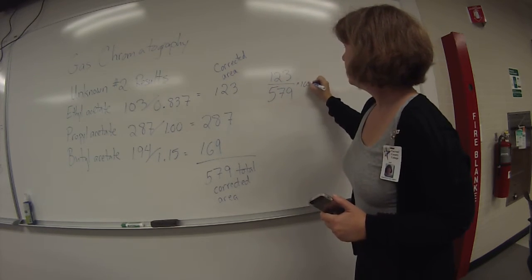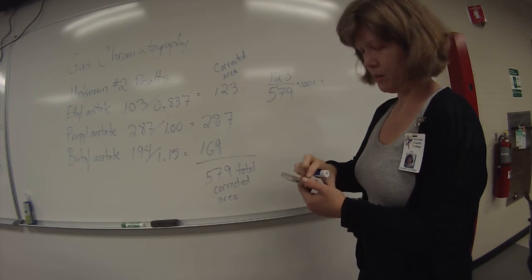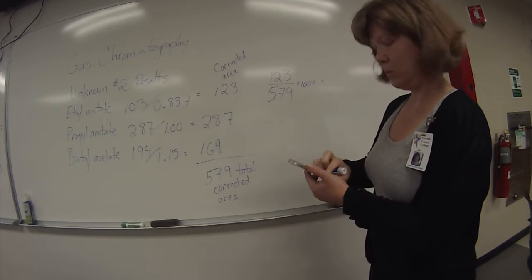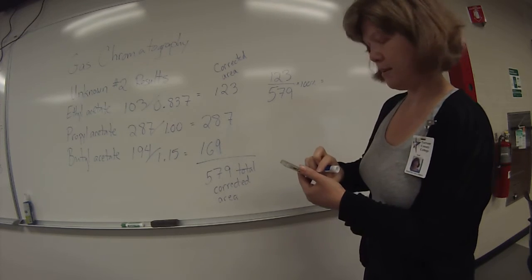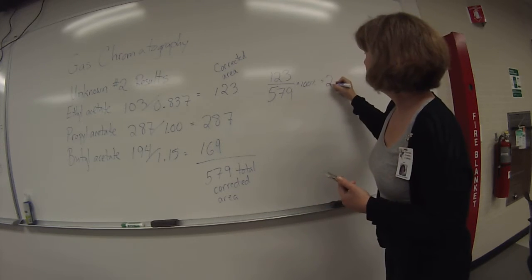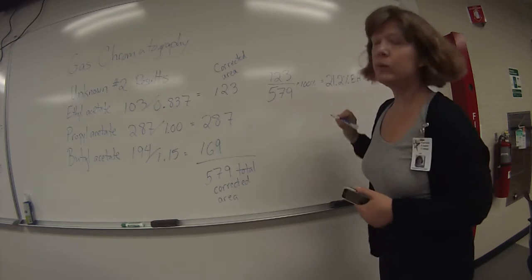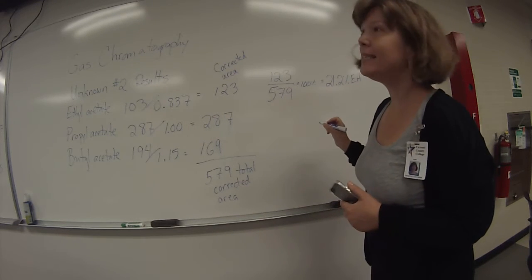Times 100%. Alright, so 123 divided by 579 times 100% is 21.2% ethyl acetate.